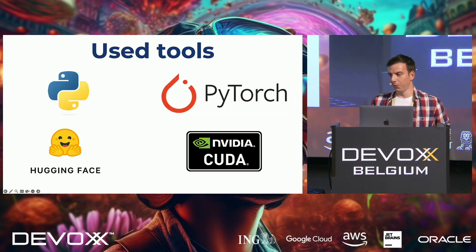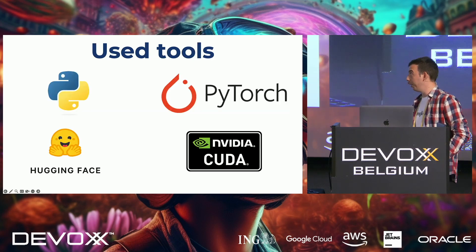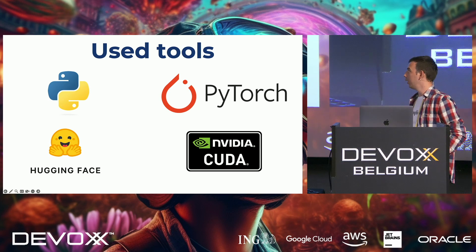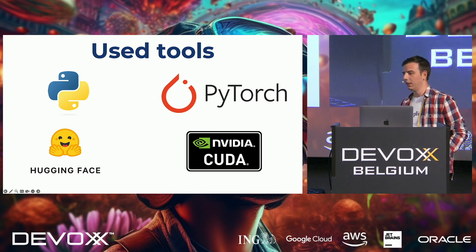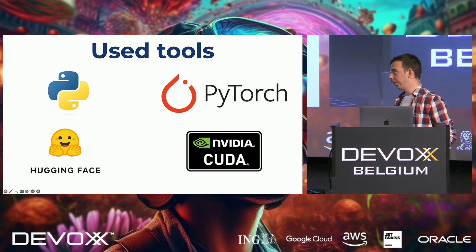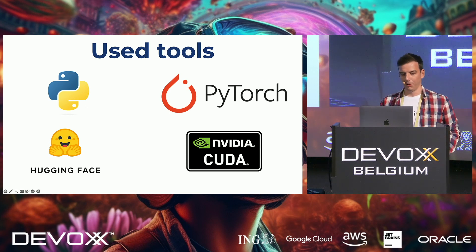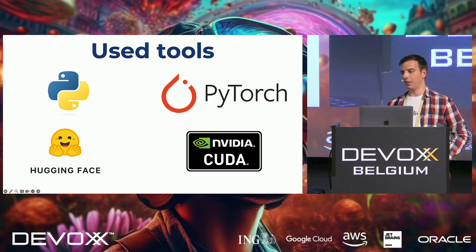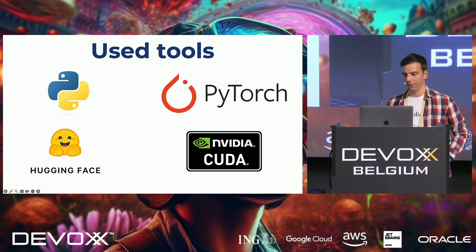The tools we used when developing a model like this were Python, PyTorch, and the Hugging Face library. And of course, all of that was running on a GPU — so we used Nvidia's CUDA library.